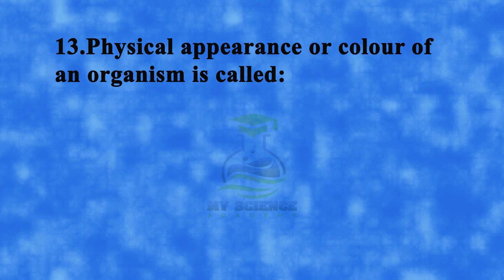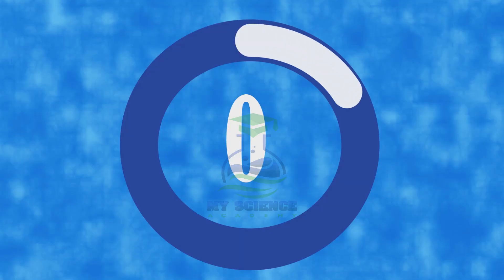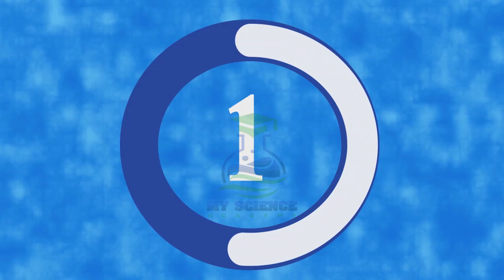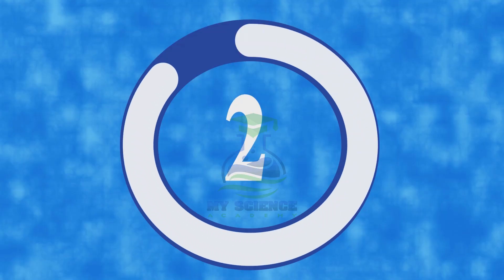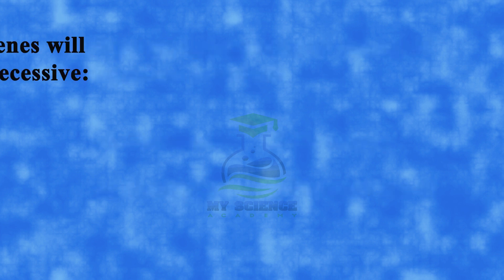Question 13: Physical appearance or color of an organism is called — A. Genotype, B. Phenotype, C. Karyotype, or D. Physical Power. Correct answer is B. Phenotype.